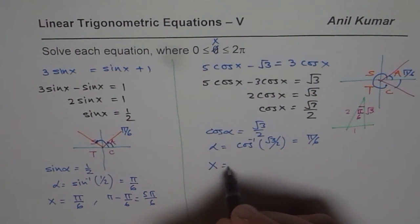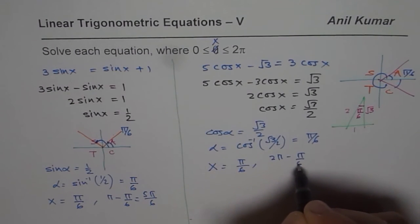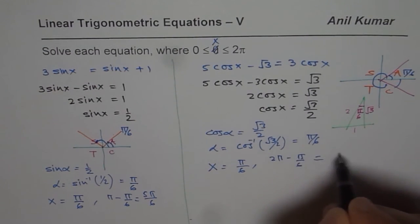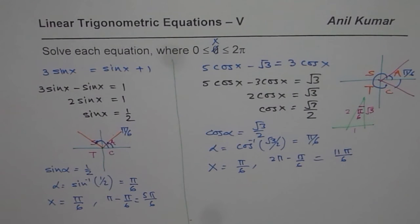So we get x equals pi by 6 and 2pi minus pi by 6. Now this 2pi minus pi by 6 is 12 minus 1, 11pi by 6. So we get 2 solutions for this particular question. So like that, you can solve your trigonometric equations.